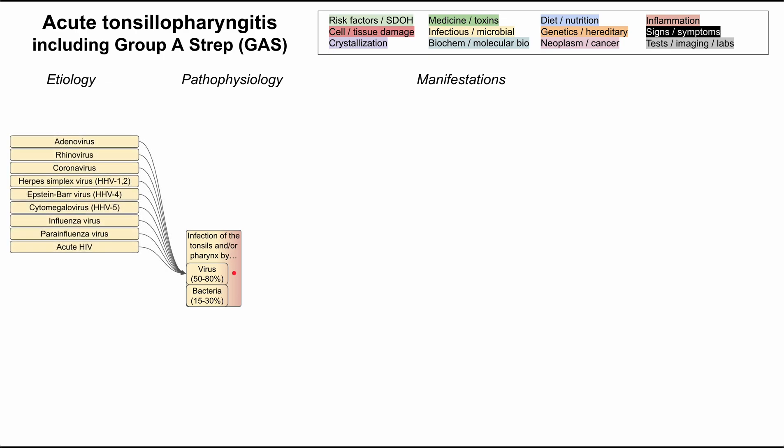Let's lay out all of the etiologies — the well-known viruses and bacteria that cause this, just to be complete. Many of the viruses include adenovirus, rhinovirus, and coronavirus, which are the most common. A bunch of the herpes viruses like herpes simplex (HHV1 and 2), Epstein-Barr virus (HHV3), and cytomegalovirus (HHV5). Influenza virus and parainfluenza virus can also cause a sore throat, and the acute phase of HIV can do this as well.